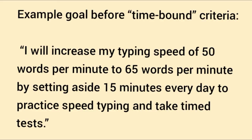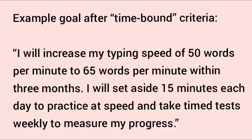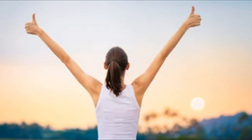For the time-bound criteria, the goal becomes: 'I will increase my typing speed from 50 words per minute to 65 words per minute within three months. I will set aside 15 minutes each day to practice speed typing and take timed tests weekly to measure my progress.' This goal now fits all SMART criteria — it is specific, outlines a way to measure progress, is achievable and relevant to the desired skill development, and sets a timeline for each milestone.